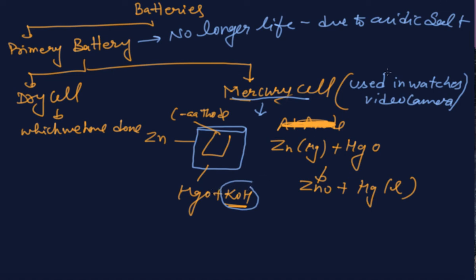Now the next point is that secondary cells. You never miss that secondary cell is coming every year. That is inverter present in our home and they are also known as battery. Thank you dear students, thank you very much.